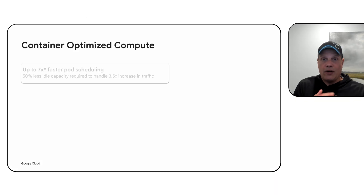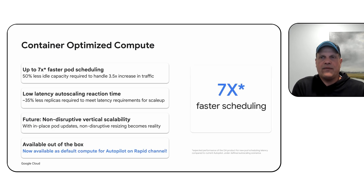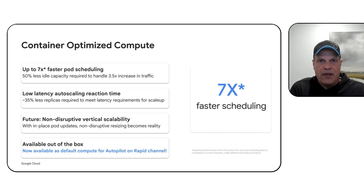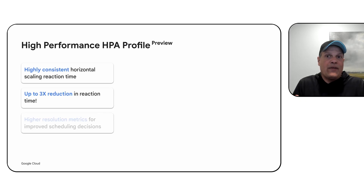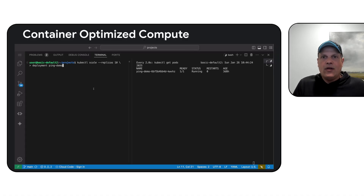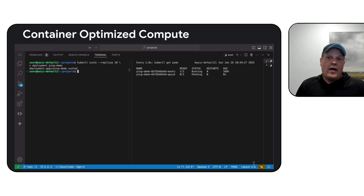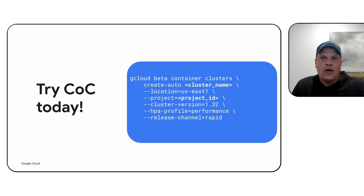Next up is Container Optimized Compute (COC), now generally available on Autopilot. It's designed for much faster auto-scaling with near real-time reactions and better right-sizing for workloads. In the past, scaling meant waiting for a node to come up while scaling a pod. With COC, this is now instantaneous — you'll see scaling happen in under 10 seconds. We've also greatly improved the speed and performance of the HPA as part of this. You don't have to do anything special to use it — just be on the Autopilot Rapid channel on release 1.32 or later, and it's there for free.